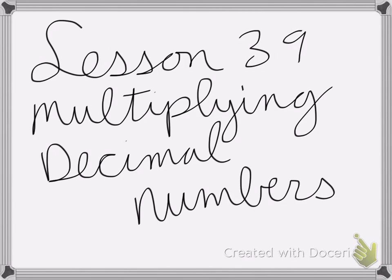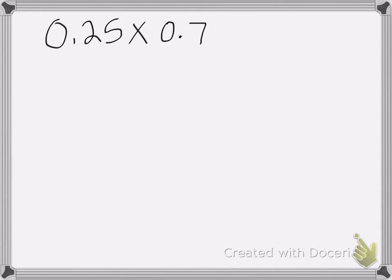Alright, so lesson 39 is on multiplying decimal numbers. Here we have 0.25 and we're going to multiply that by 0.7. So let's first line them up: 0.25 times 0.7.